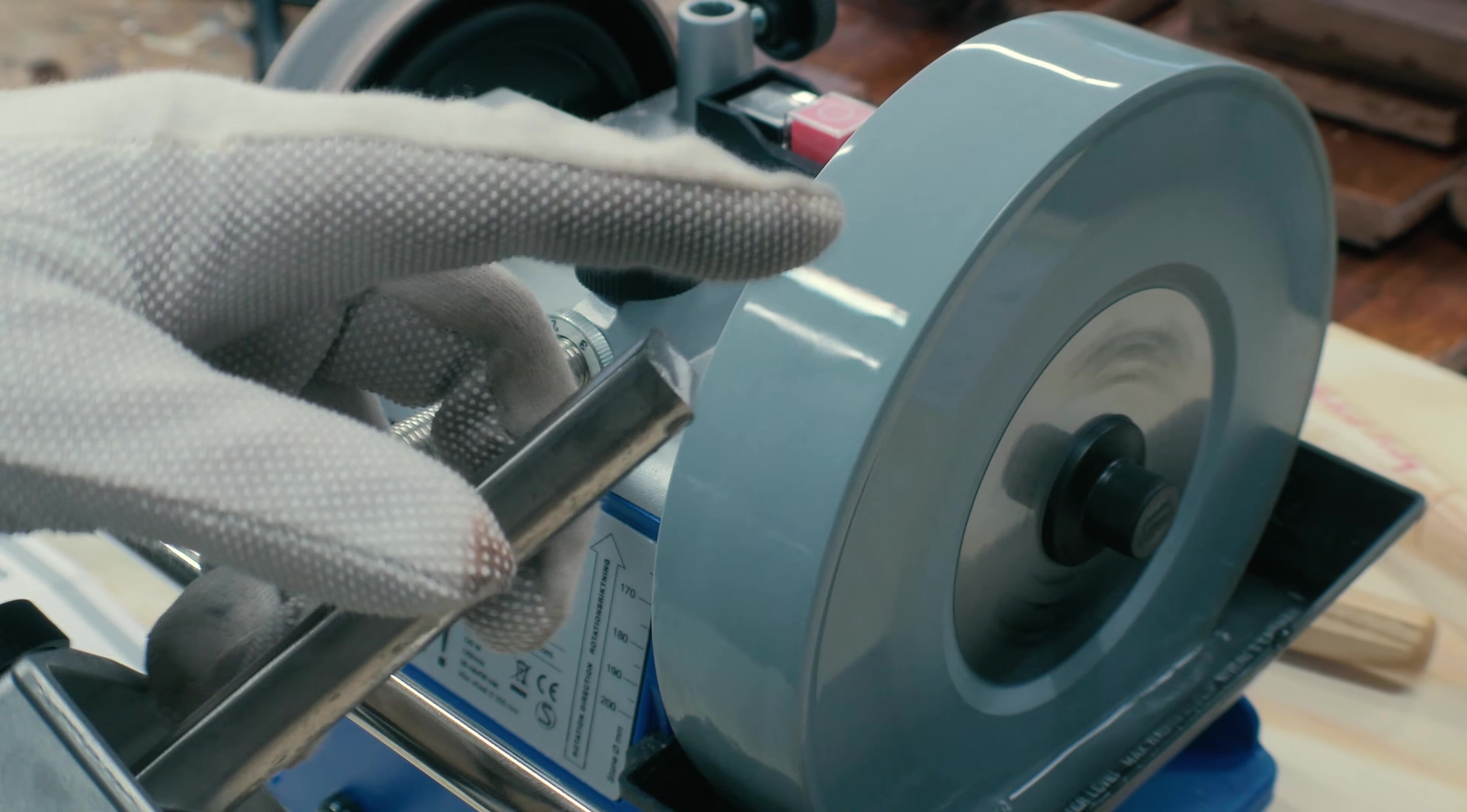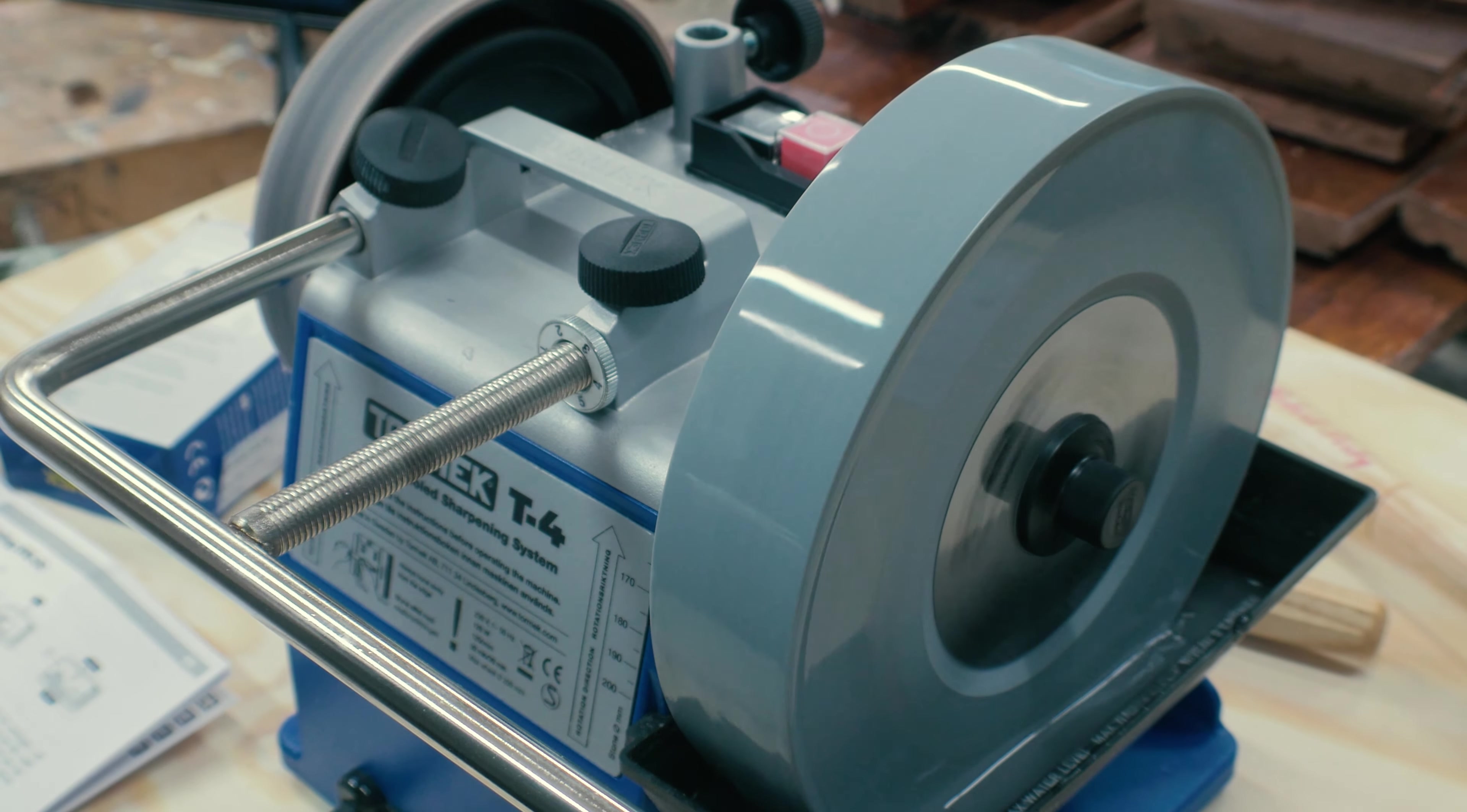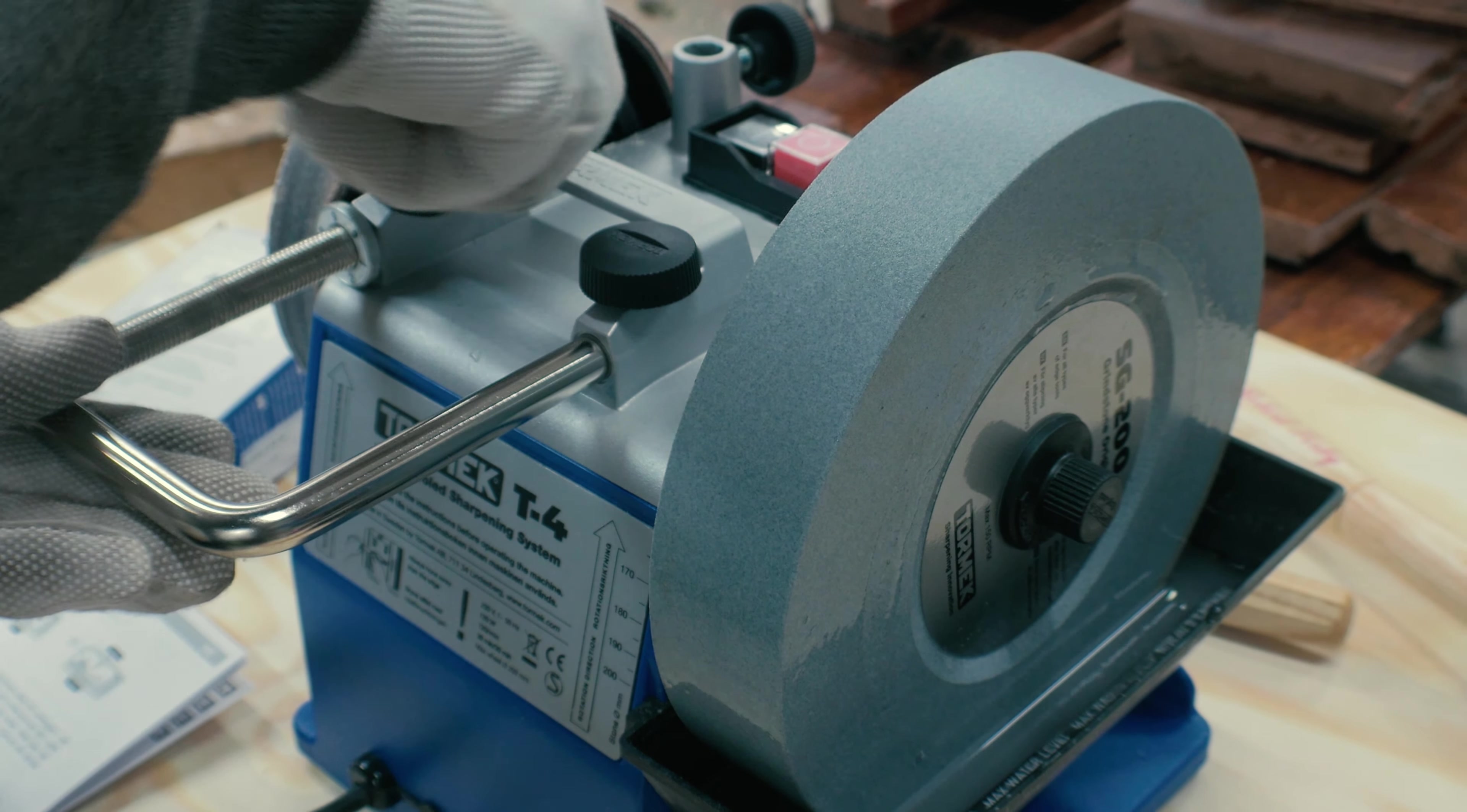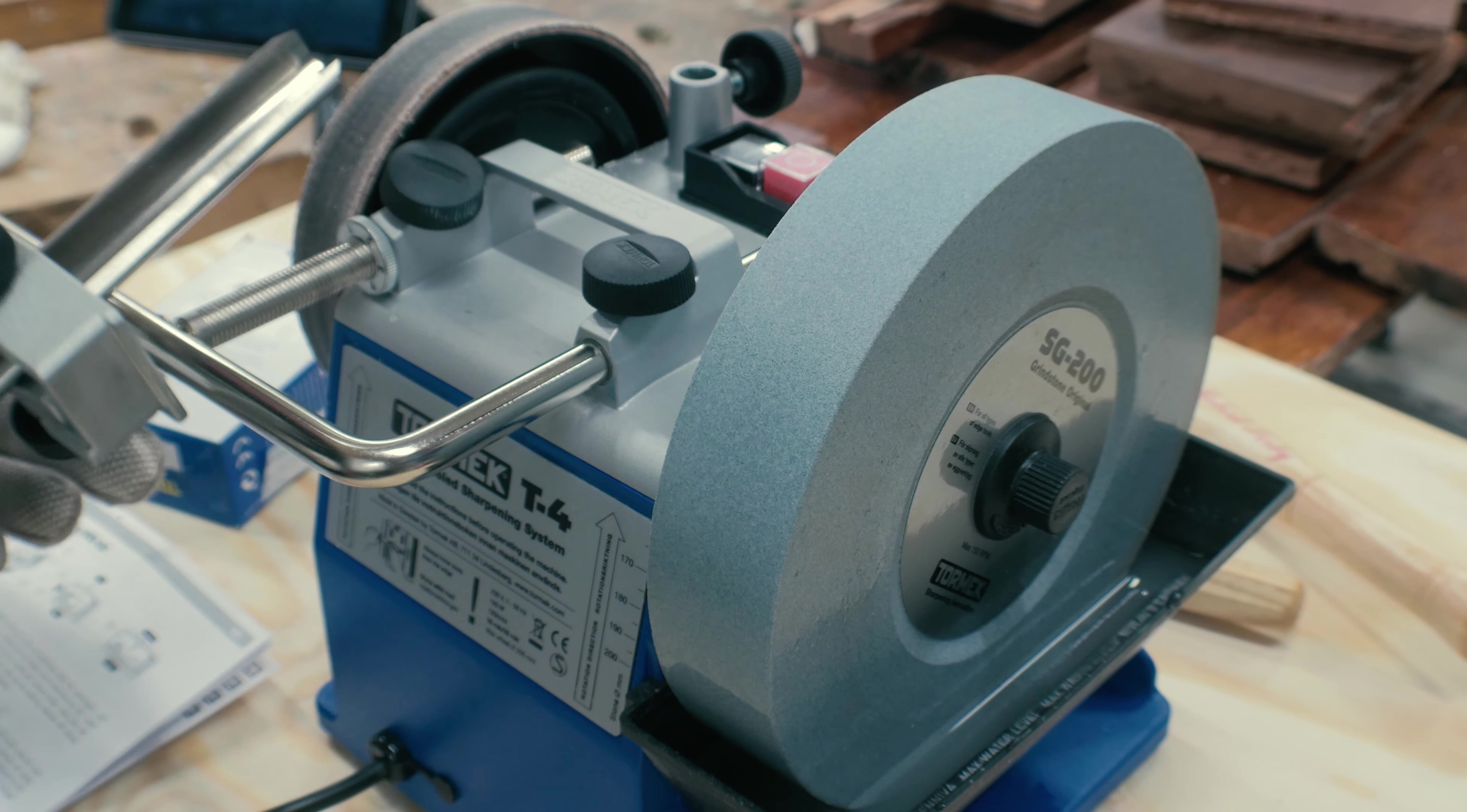To take off the beveled edge, which now is microscopically in the front here, we just turn the universal support. So I do the same adjustment that I did with the grinding stone.